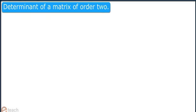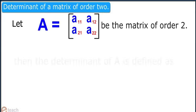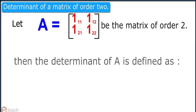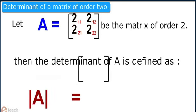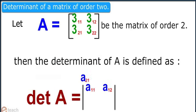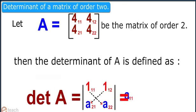Determinant of a matrix of order 2: let A be the matrix of order 2. Then the determinant of A is defined as follows.